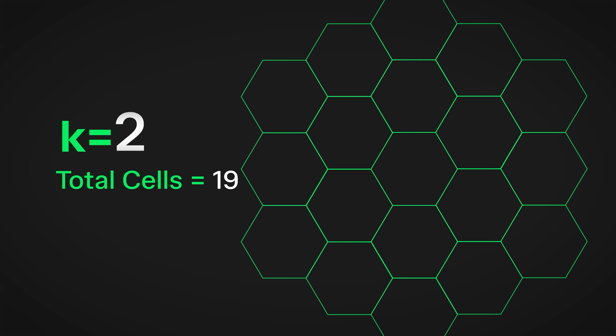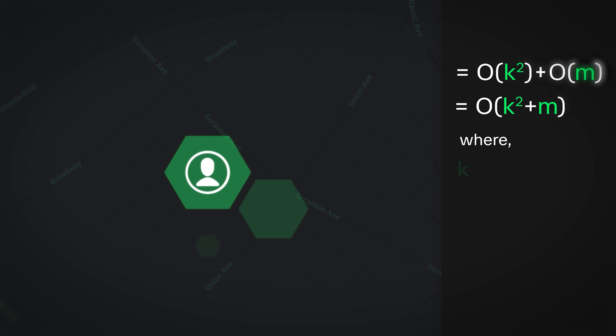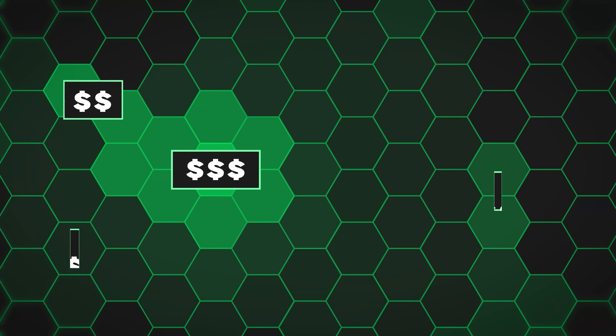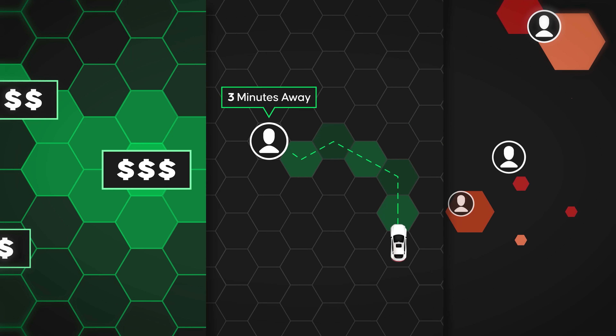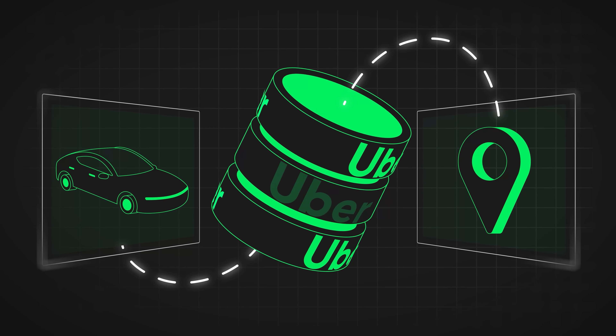For example, if k equals 1, that includes the first layer of neighbors — seven cells total. If k equals 2, the second layer is also included. This brings the time complexity down from O(n) — where n could be millions of active drivers — to O(k² + m), where k is the radius and m is the number of nearby drivers. So if there are 100 nearby drivers, Uber only iterates over those 100 instead of millions. H3 is also used for dynamic pricing zones, estimating time of arrival, and forecasting demand.